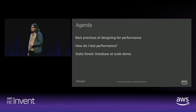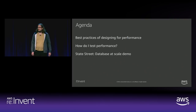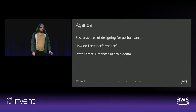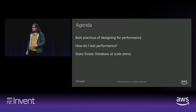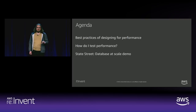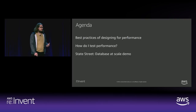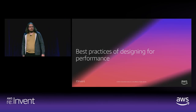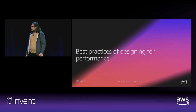Let's talk about the agenda for this session. First, we're going to talk about some of the best practices of designing for performance in Kubernetes. We're going to talk a little bit about how we can test performance, and then we're going to show that demo of a highly-optimized Kubernetes cluster with some of the tips and tricks along the way and applications of the optimization principles discussed earlier in the slide deck.